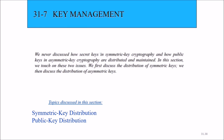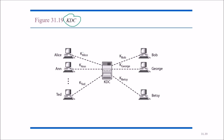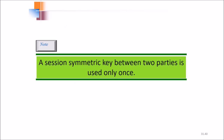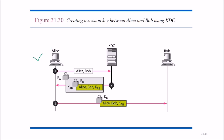Now we come to key management. We discuss how secret keys in symmetric key cryptography and public keys in asymmetric key cryptography are distributed and maintained. For symmetric key distribution, we use KDC — Key Distribution Center. A session symmetric key between two parties is used only once. KDC gives a session key KAB to Alice and Bob. Finally, this session key is used for Alice-Bob communication.